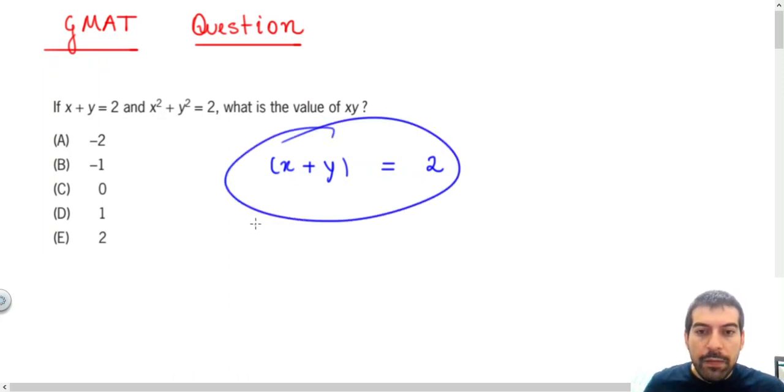If I have this information here, I have that x plus y squared, for example, needs to be equal to 2 squared.